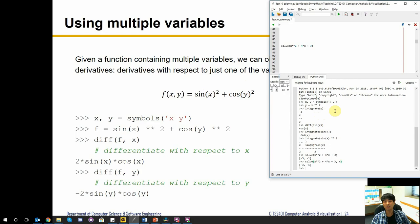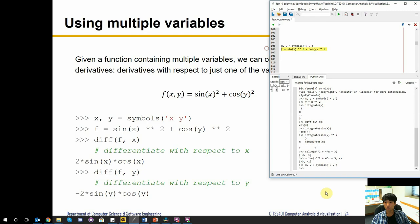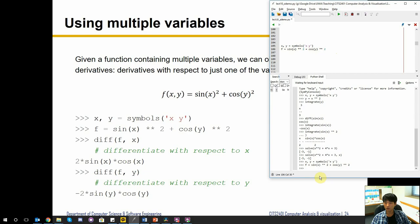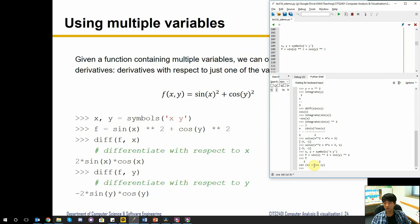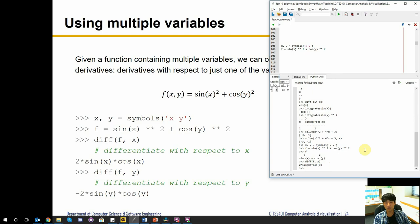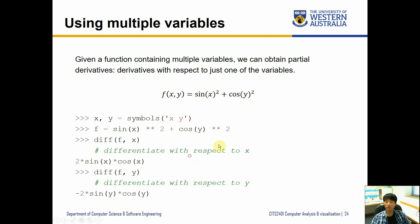Now with multiple variables, what we want to do is differentiate with respect to a specific symbol. Let's redefine the symbols just in case and define a function f as sin²(x) + cos²(y). If we type f it shows us that equation. We can differentiate f with respect to x, which gives us 2·sin(x)·cos(x). We can also differentiate with respect to y, and we get the corresponding solution in terms of y.